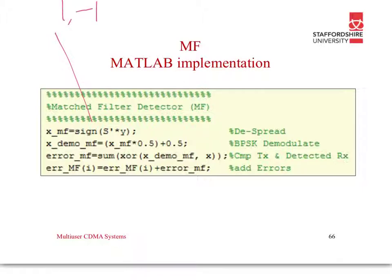X is our input data and our X demo matched filter, demodulated matched filter, is 0.5. In this case, we have 1s and minus 1s. If our match filter was a 1, if we add 0.5 to it, it's 1 and a half. If we times it by 0.5, it's a half. And we add 0.5, it's a 1. If the output was a minus 1, minus 1 times a half is minus a half, plus 0.5 gives a 0. Basically, we're converting to 1s and 0s.